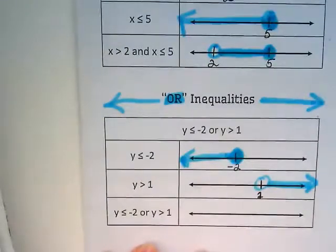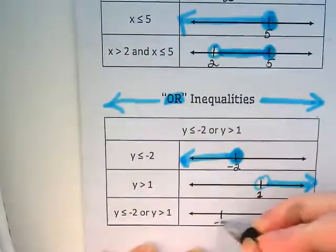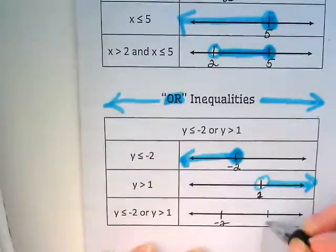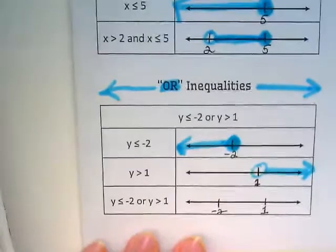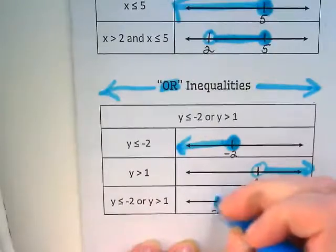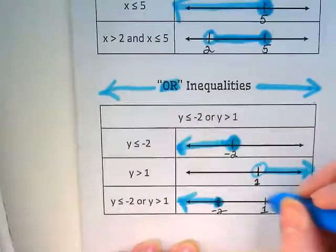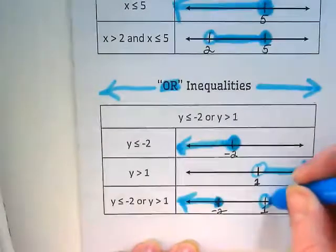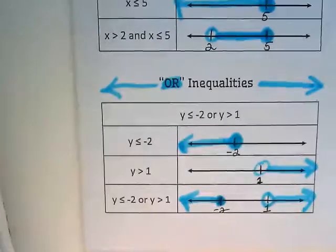And now we're going to do the compound inequality where we're putting them together. We have negative 2 and we have 1. And we're going to repeat what we showed up here. Negative 2 going left. Positive 1 open circle and going to the right. So that's what our inequalities would look like when we do the compound.